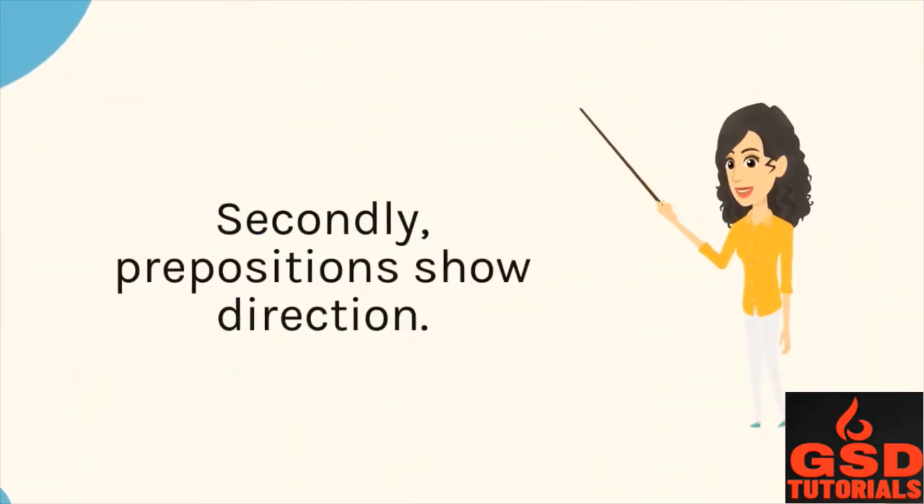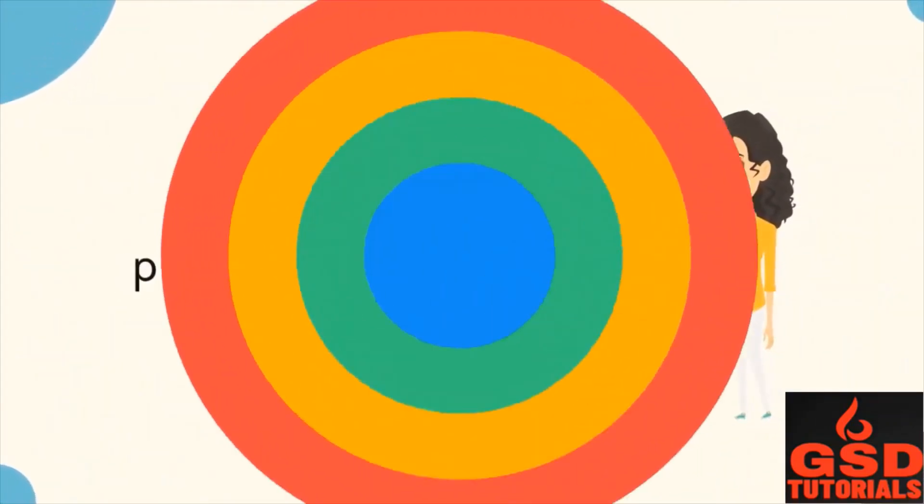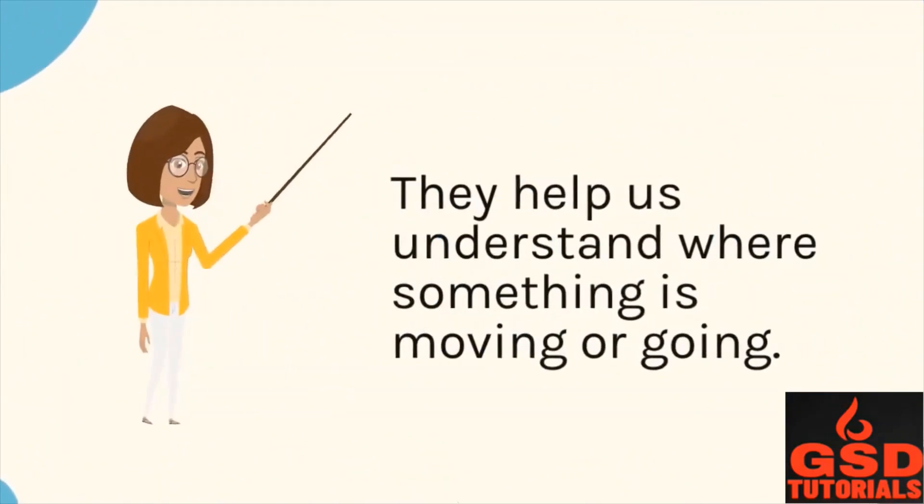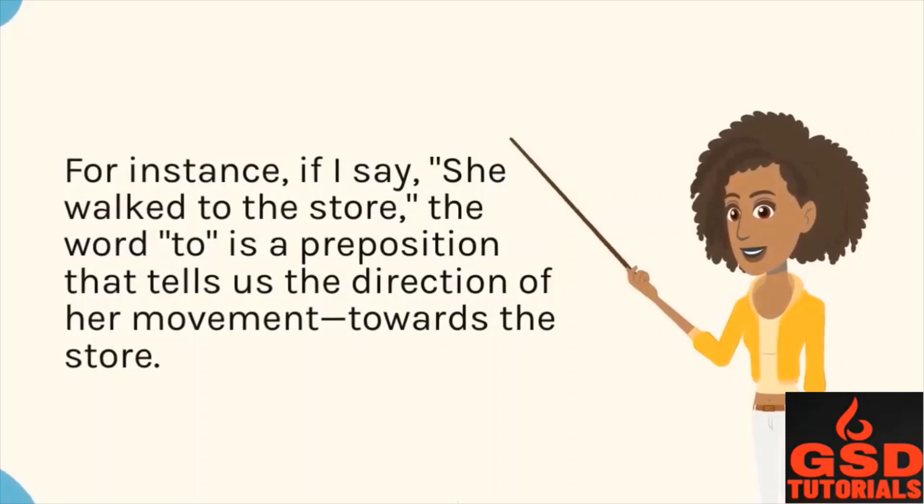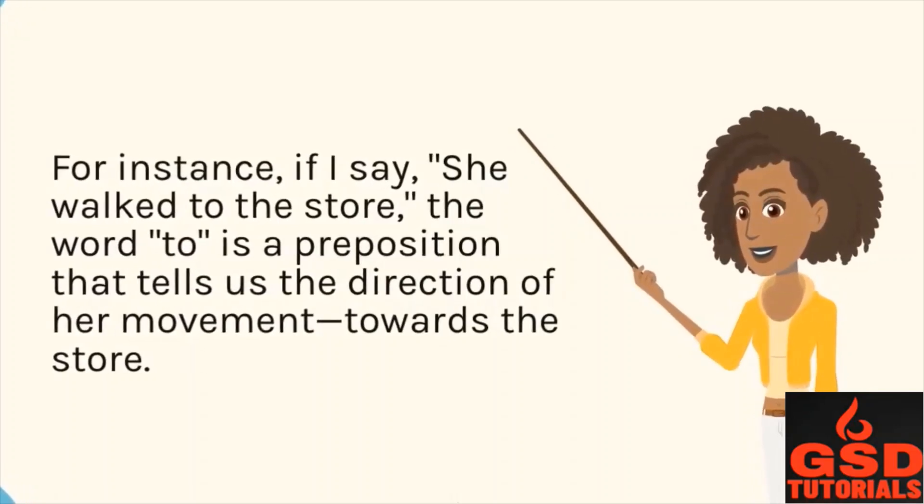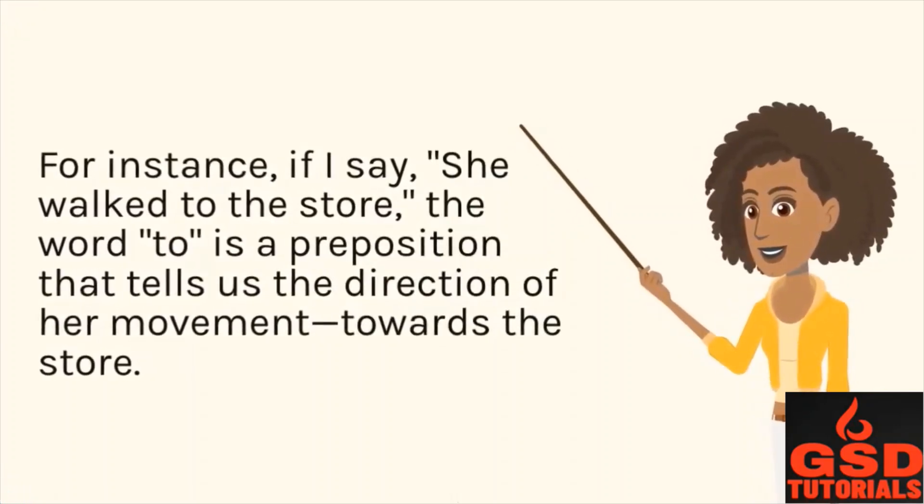Secondly, prepositions show direction. They help us understand where something is moving or going. For instance, if I say, she walked to the store, the word to is a preposition that tells us the direction of her movement towards the store.